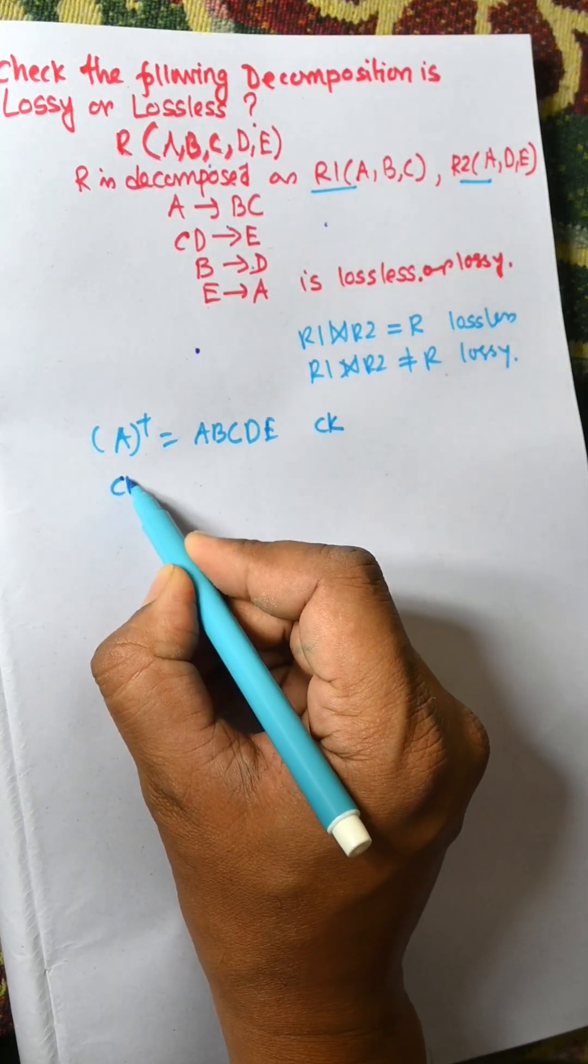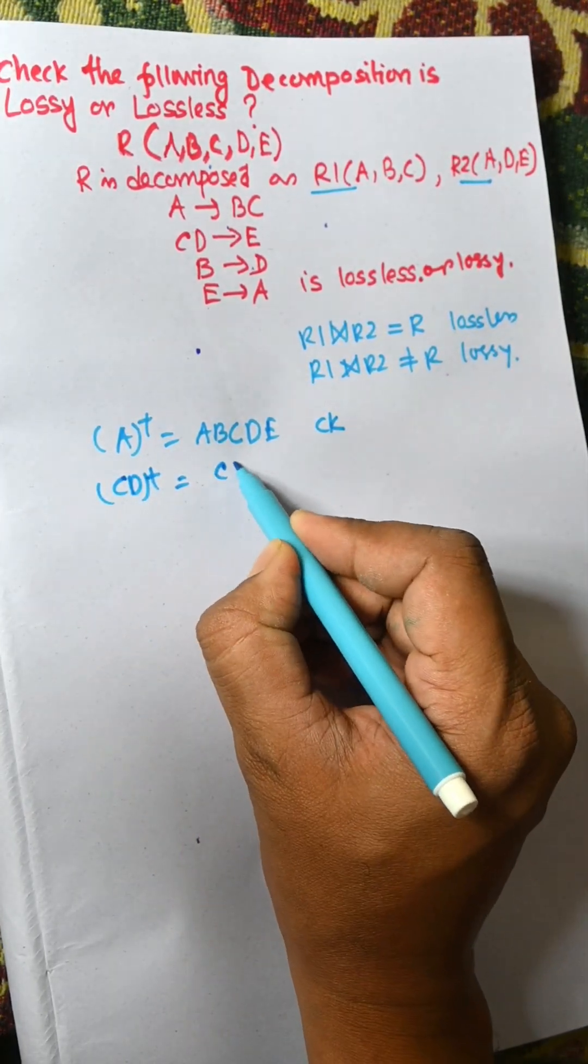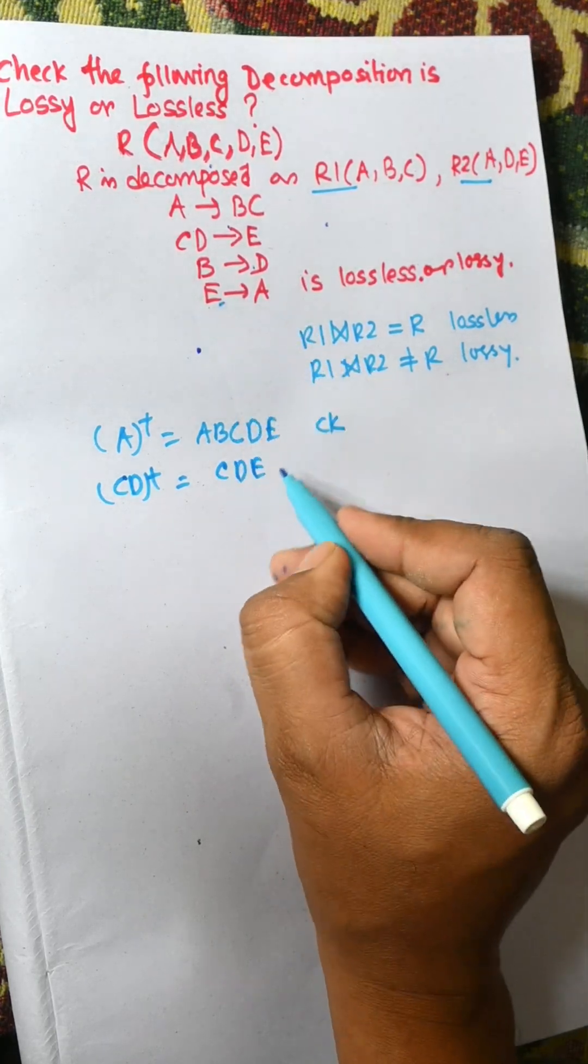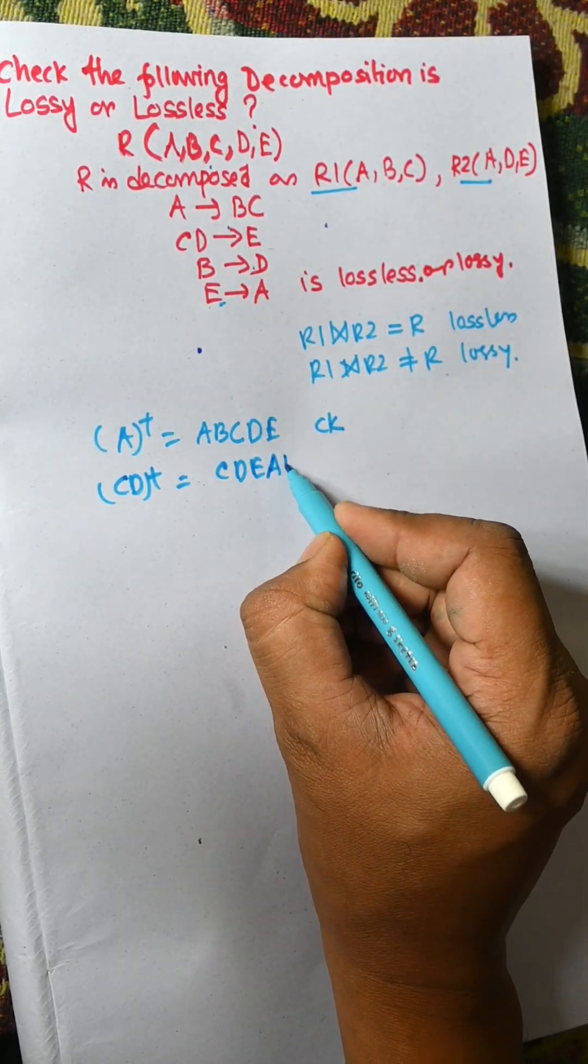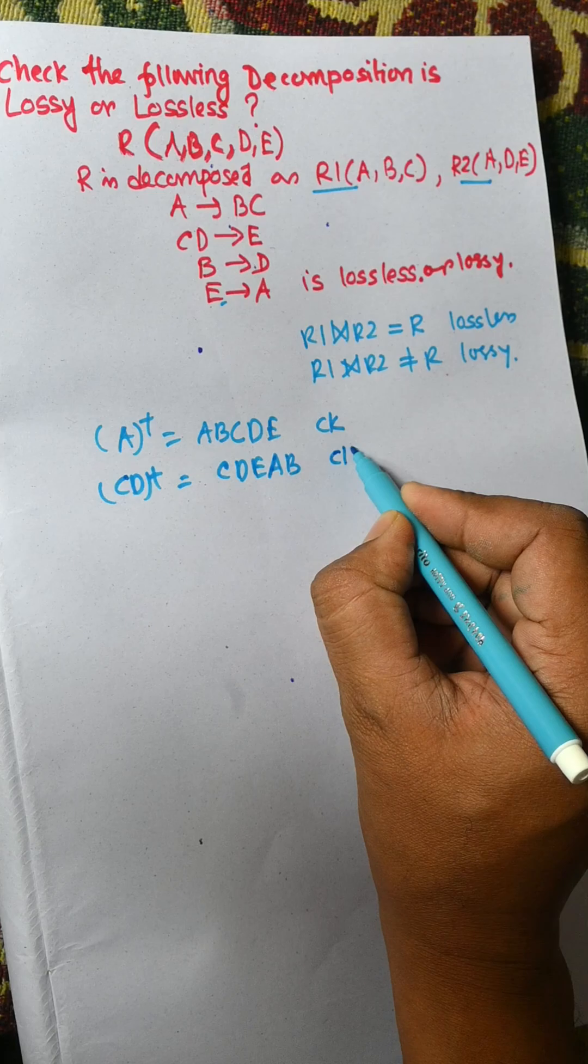Now CD plus equal to CDE, from E to A, and A to BC. So CD is also a candidate key.